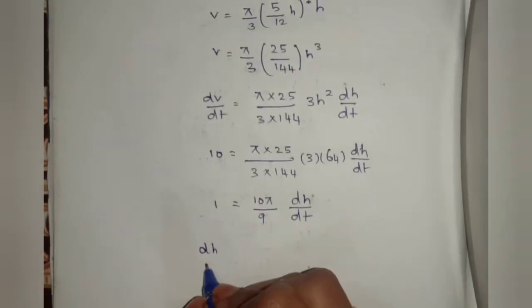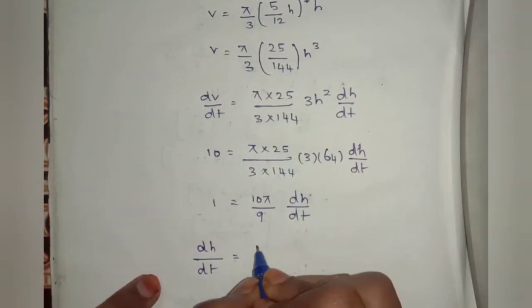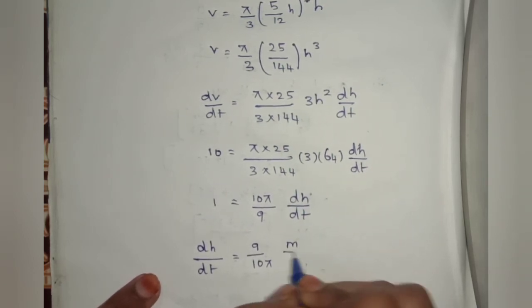dh/dt equals 9 divided by 10π meters per minute.